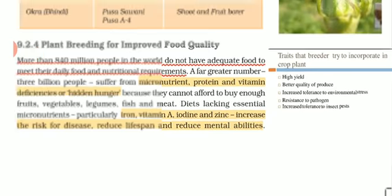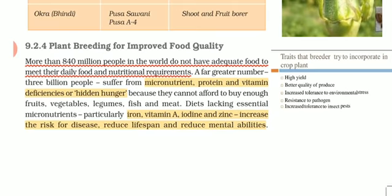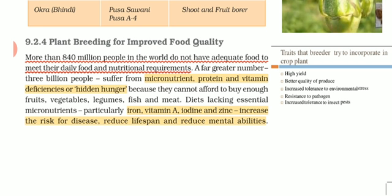This topic, biofortification, talks about how hidden hunger could be stopped. Hidden hunger means those people who are eating food but that food is not nutrient rich. Hidden hunger means a diet which lacks adequate nutrients — that can be micronutrients, proteins, or vitamins — because people don't have enough money to afford these nutrients. So what can be done? We can increase the quality of protein, oils, and vitamins in normal growing crops. Particularly iron, vitamin A, iodine, and zinc are deficient and can lead to reduced lifespan and more prone to diseases.